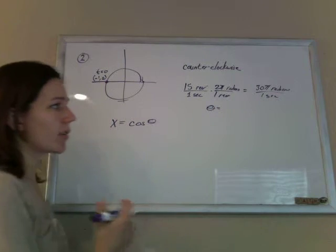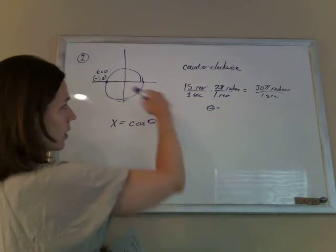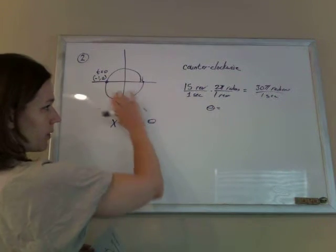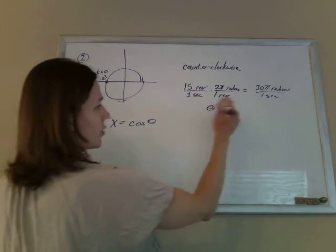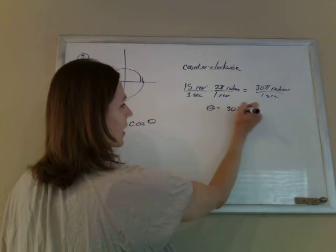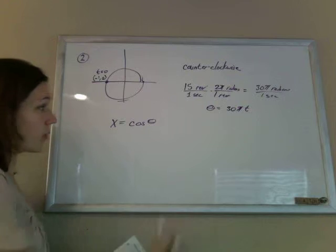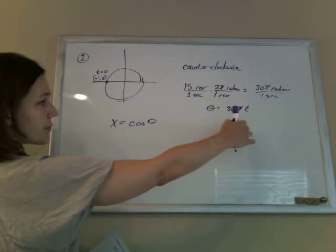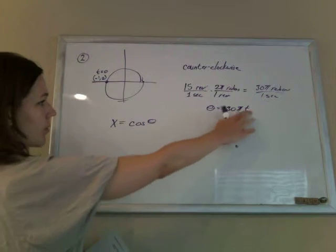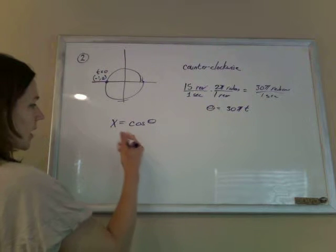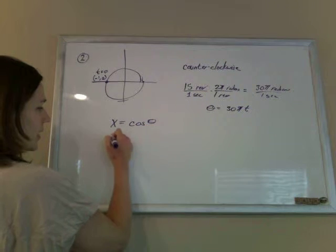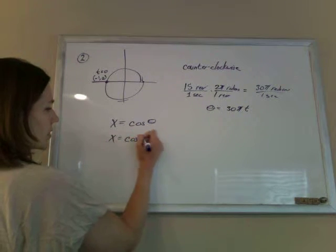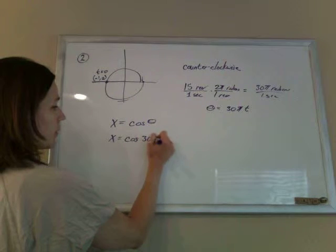So if you want to figure out the angle, if you're going an angle of 30π radians every second, then your angle is going to be 30π times how many seconds you go, where t is in seconds. So your angle is 30π times the number of seconds. So if I just plug that into there, x is cosine times 30πt.